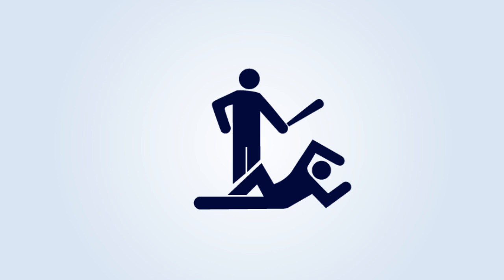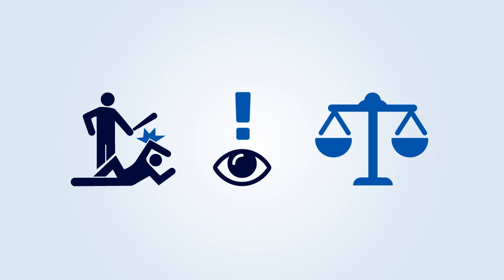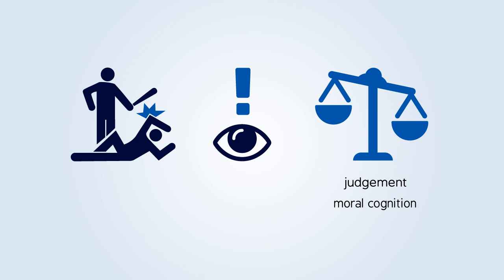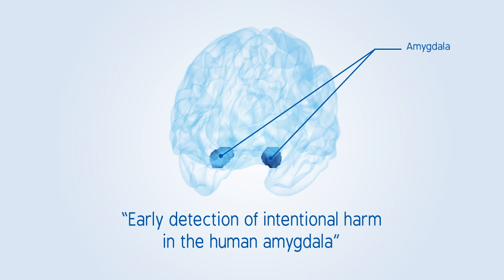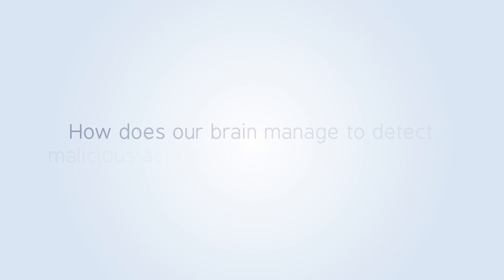The ability to identify whether someone is committing or about to commit a malicious action against another individual proves crucial to judgment, moral cognition and empathy. This study shows for the first time that the amygdala plays a crucial role in the early detection of the intention to harm.